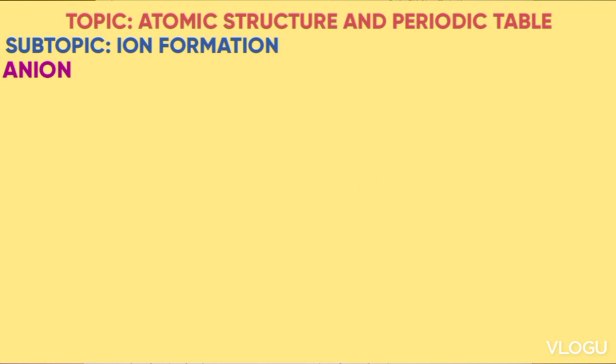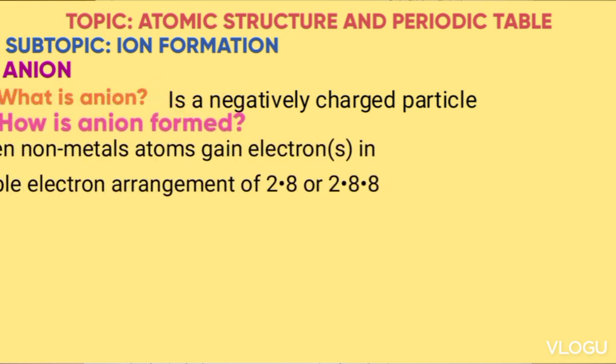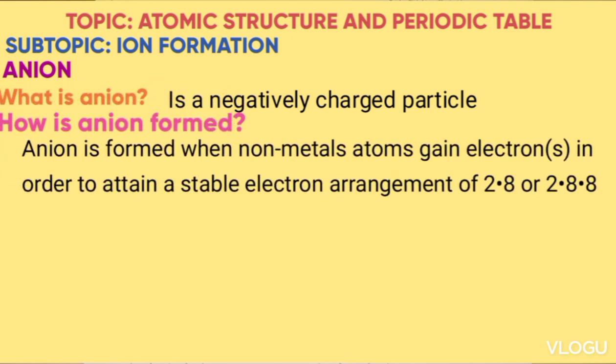So we start by defining anion. Anion is a negatively charged particle. Anion is formed when non-metal atoms gain electrons in order to attain a stable configuration of 2.8 or 2.8.8.